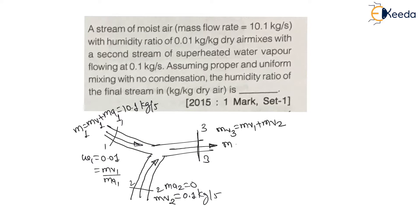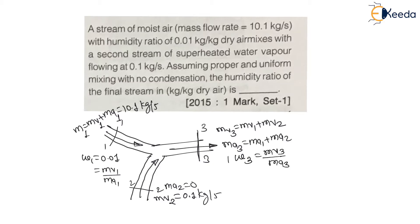Similarly, mass of air 3 equals mass of air 1 plus mass of air 2. This is called proper and uniform mixing without condensation. The question asks for the humidity ratio of the final stream — that is omega 3 in kg per kg of dry air, which equals mass of vapor 3 divided by mass of air 3.